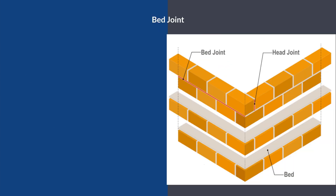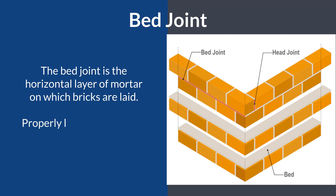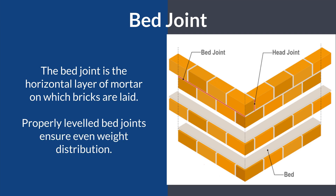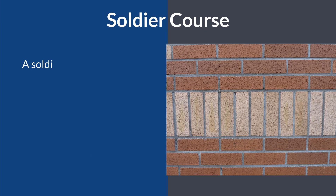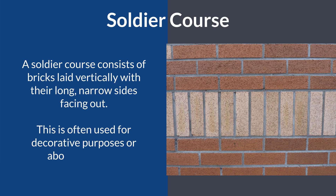7. Bed Joint. The bed joint is the horizontal layer of mortar on which bricks are laid. Properly leveled bed joints ensure even weight distribution. 8. Soldier Course. A soldier course consists of bricks laid vertically, with their long, narrow sides facing out. This is often used for decorative purposes or above openings.